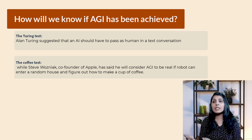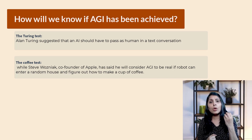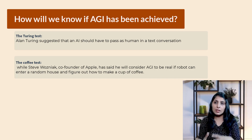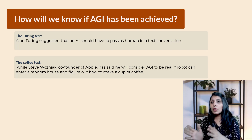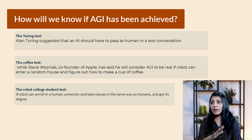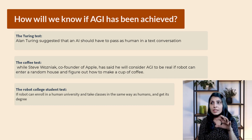The second test is the Coffee Test, proposed by Steve Wozniak, co-founder of Apple. He said he would consider AGI to be real if a robot can enter a random house, figure out how to make a cup of coffee — including identifying the coffee machine, figuring out what the buttons do, and finding where the coffee is. Another method suggested is the Robot College Student Test, which simply means if a robot can enroll in a human university, take classes the same way a human does, and get a degree, then we can consider that AGI has been created. These are different ways proposed by different researchers, but there is no universally accepted definition.